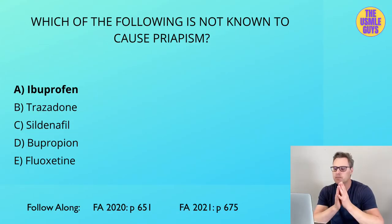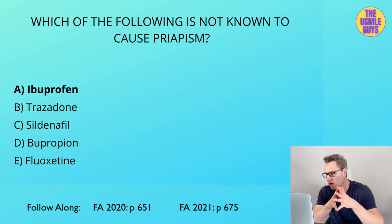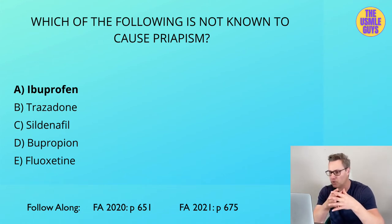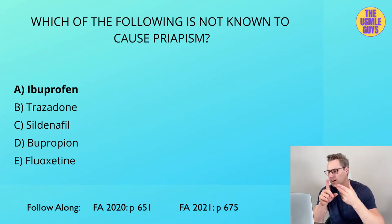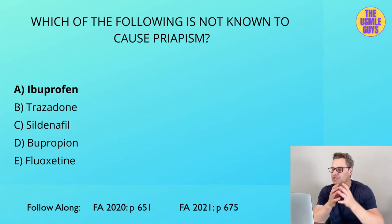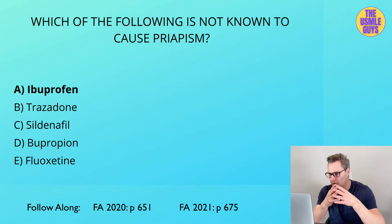The correct answer here is A. Some of the most commonly known drug-induced causes of priapism include trazodone as well as any of the erectile dysfunction drugs like sildenafil. But there are a handful of drugs that can cause priapism outside of these, including a variety of antidepressants — bupropion, fluoxetine, or sertraline — clozapine, which is an antipsychotic, chlorpromazine, which is a psychotropic, prazosin, which is an alpha blocker, and hydroxyzine, which is an anxiety agent.